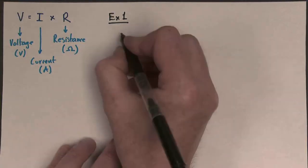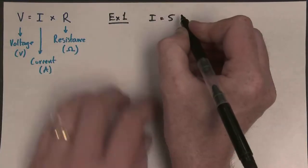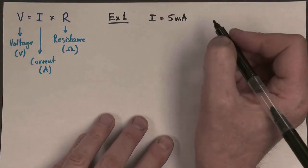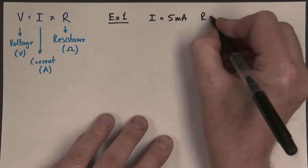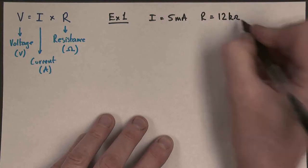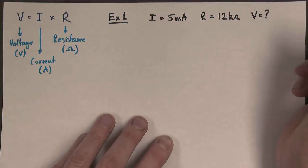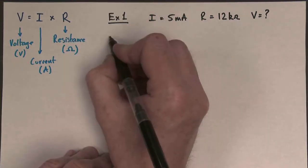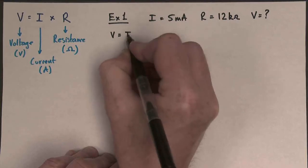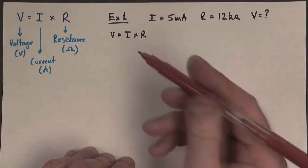So here's my first example. I'm going to put the current as 5 milliamps, and we need to understand what that means. And the resistance is going to be 12 kilo-ohms. And our question is, what is the voltage in this case? Now, this is quite a nice example because our equation is already in the correct form. We already have V equals I times R. So all we need to do is multiply our numbers together.